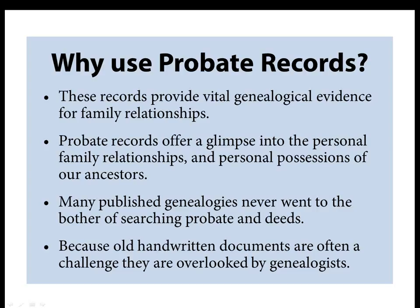A probate may say, 'I leave five pounds to my daughter Elizabeth and ten pounds to my daughter Hannah,' and then, 'to my daughter Mary, I have already given her her fair portion.' Sometimes it even says the person is leaving nothing to a particular child or relative. Many published genealogies never went into the probate court. This could be because the author couldn't get to the probate court, or because old handwriting is very difficult to read and these handwritten documents are often a challenge overlooked by genealogists, both well-trained ones and beginners.